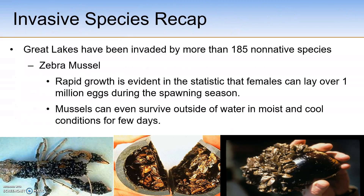Focusing on one invasive species specifically — the zebra mussel — in the Great Lakes region there are more than 185 non-native species that have been introduced. Females can lay over 1 million eggs during the spawning season, and these mussels can survive outside of water in moist, cool conditions for a few days. Bio-invaders affect aquatic systems and are blamed for about two-thirds of fish extinctions in the United States up through 2009. At least 13 of the recent invading species in the Great Lakes have threatened native species and caused billions of dollars in damage. The fish-killing lamprey is one example.